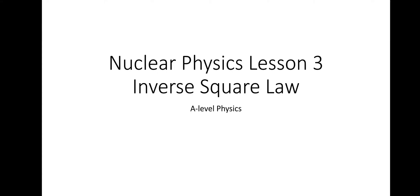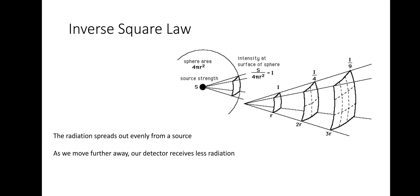Hi there, this is Nuclear Physics Less Than 3, and this one is Inverse Square Law. The Inverse Square Law is where radiation spreads out evenly from a source, and as we move further away, a detector would receive less and less radiation, as you can see from this diagram.